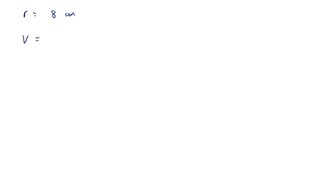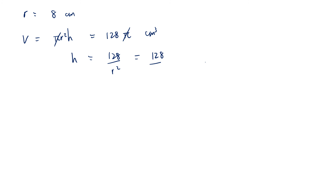We've now established that to minimize the surface area, the radius must equal 8 centimetres. From our volume constraint, V = πr²h = 128π cm³. Cancelling π, h = 128/r². If r = 8, then h = 128/8² = 128/64 = 2 centimetres. So these are the optimal dimensions of the can.